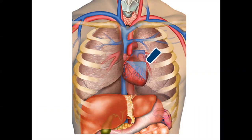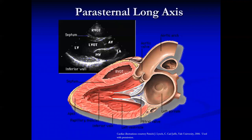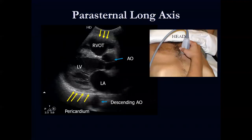The other view you may need is the parasternal long axis, for which you'll want the phased array transducer to get between the ribs. In this view, we're basically bivalving the heart like an oyster. You'll see superficially the right ventricular outflow tract, the entire left ventricle behind that with the aorta, the valve and outflow tract, and the mitral valve below that. Very importantly, you can see the descending aorta posterior to the pericardium. You can really see the pericardium well towards the far field between the left atrium and the descending aorta — that's where you'll be watching for fluid.